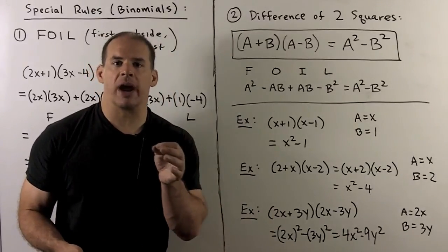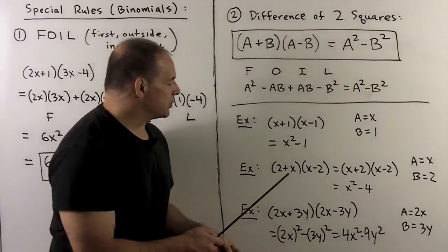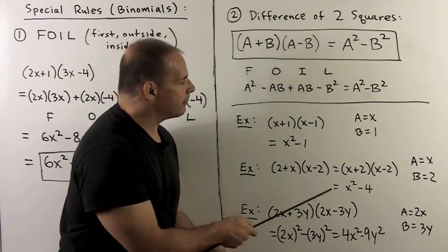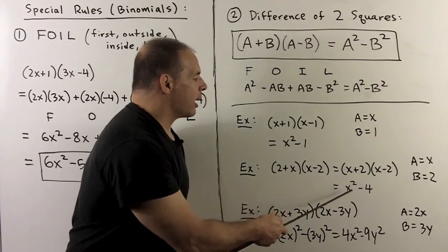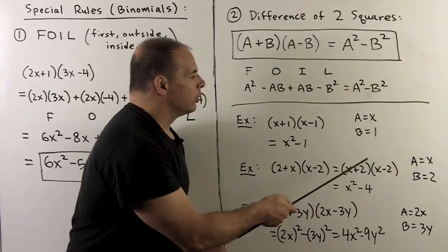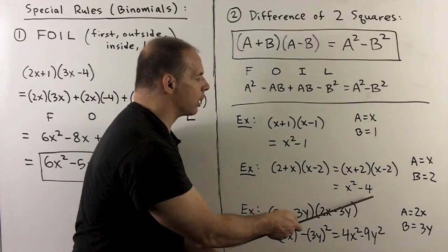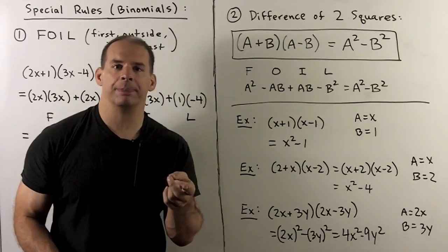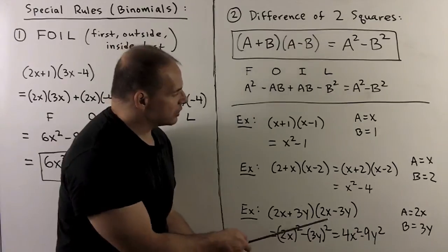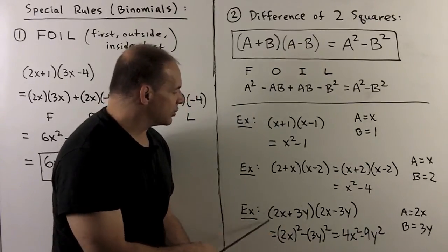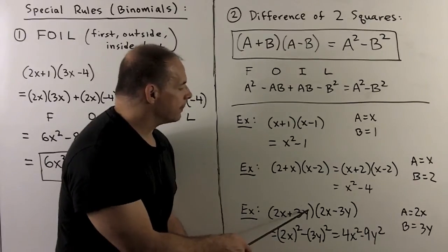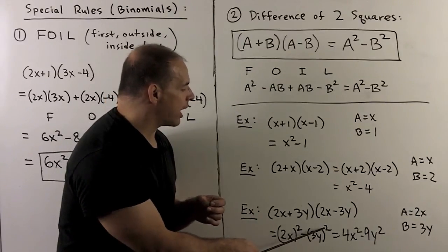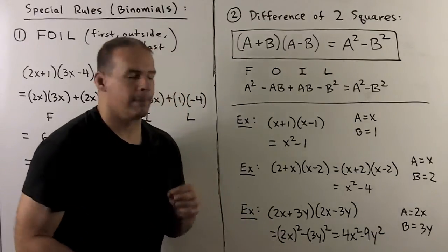Sometimes we have to rearrange terms to use difference of two squares. For instance, 2 plus x times x minus 2 can be rewritten as x plus 2 times x minus 2, with a equal to x and b equal to 2, giving x squared minus 4. We can also apply this to more complicated terms: 2x plus 3y times 2x minus 3y, where a is 2x and b is 3y. Applying the rule gives 2x squared minus 3y squared, or 4x squared minus 9y squared.